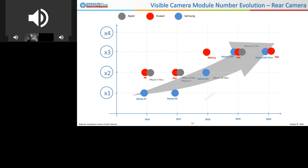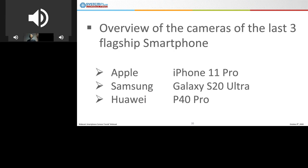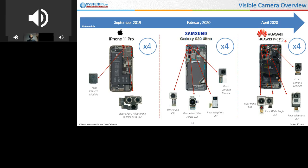To show the latest trends, I selected the three last high-end smartphones from the three main OEMs: the iPhone 11 Pro from Apple, Galaxy S20 Ultra from Samsung, and P40 Pro from Huawei. We don't have the iPhone 12 yet as it is scheduled this month. On this slide is the release date of each selected smartphone. We can show there are four visible cameras in each smartphone — three on the rear face and one on the front. On the rear face, there are three cameras with the same function: one main camera, one wide-angle camera, and one telephoto camera.